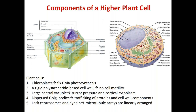The Golgi apparatus in land plants is dispersed. There is no central Golgi as you see in animal cells, where there's a centralized Golgi body typically near the nucleus or the centrosome. In plants, there are hundreds of Golgi bodies dispersed and moving around in the cytoplasm. The plant Golgi is important not only for trafficking of proteins and delivery to various compartments, but also as a major factory for cell wall component synthesis and trafficking. A lot of cell wall components are synthesized in the Golgi and must be packaged and delivered for secretion.